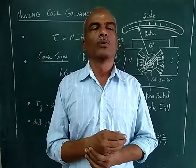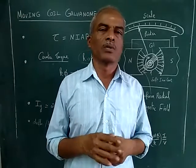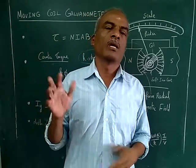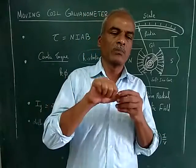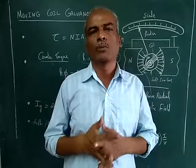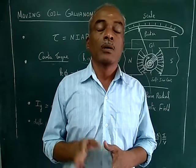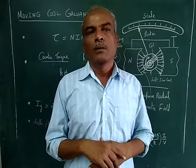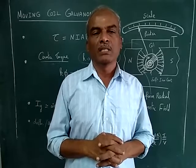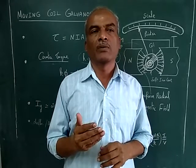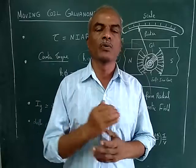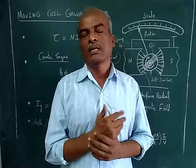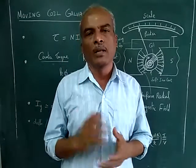We already know the current, the magnetic field, and the force are all mutually perpendicular to each other. By the right-hand thumb rule, current flowing in this direction means the magnetic field will be in this direction — these two are mutually perpendicular — and the force is perpendicular to both. We make use of that force to make the needle deflect and measure the current flowing through the coil.